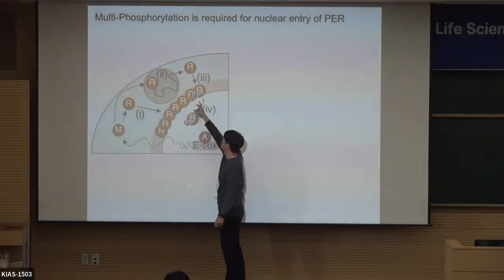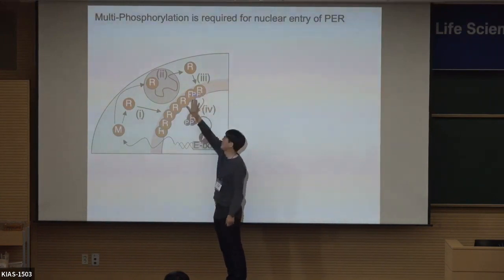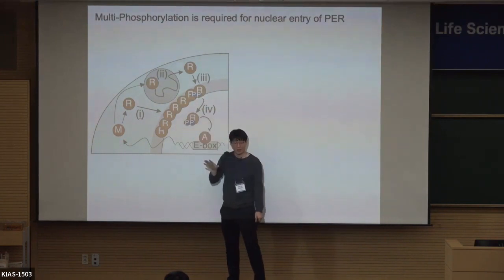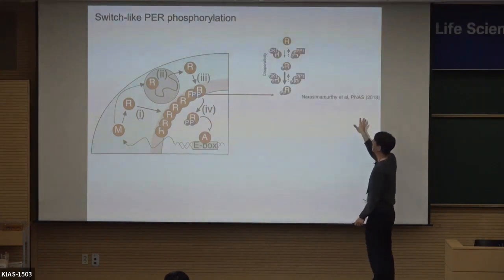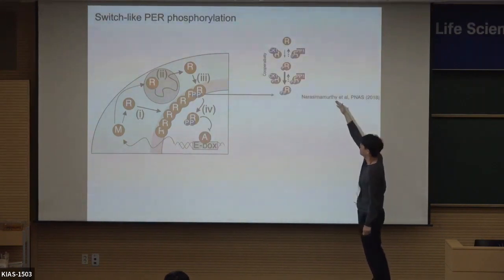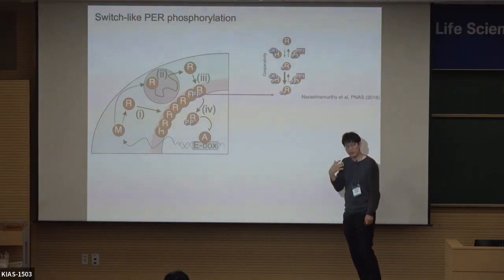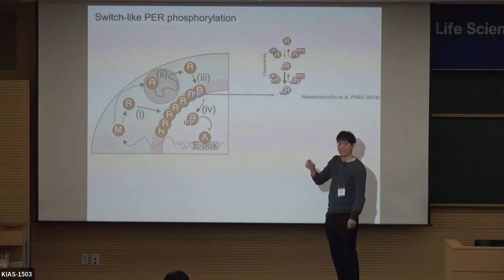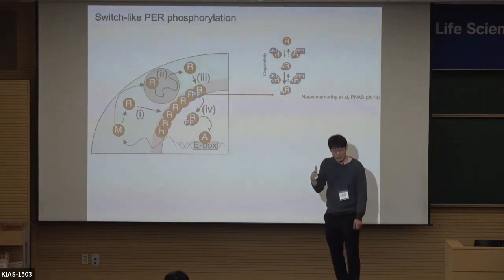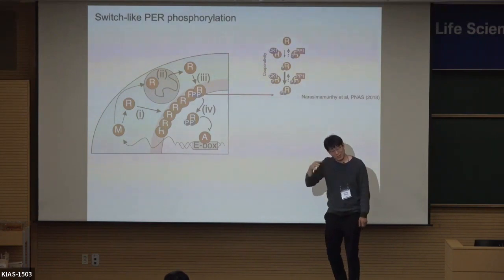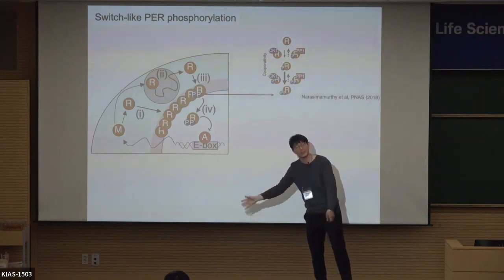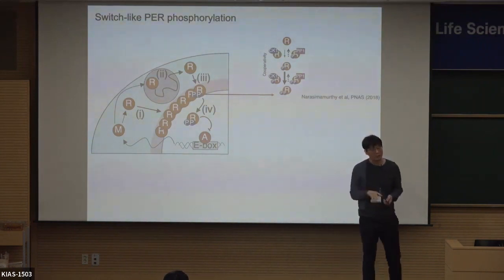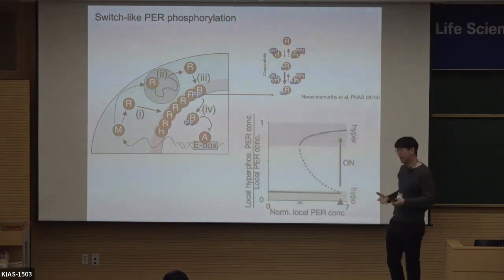What is known is that when the period protein enters the nucleus, it must be phosphorylated — that's already known at multiple sites. A couple of years ago, we found with the Duke-NUS group that this phosphorylation occurs in a cooperative manner. First, phosphorylation is very, very slow. But once that slow phosphorylation occurs, the follow-up phosphorylation is very fast — one phosphorylation triggers neighboring phosphorylation. With this cooperative phosphorylation, we found we can make a switch.